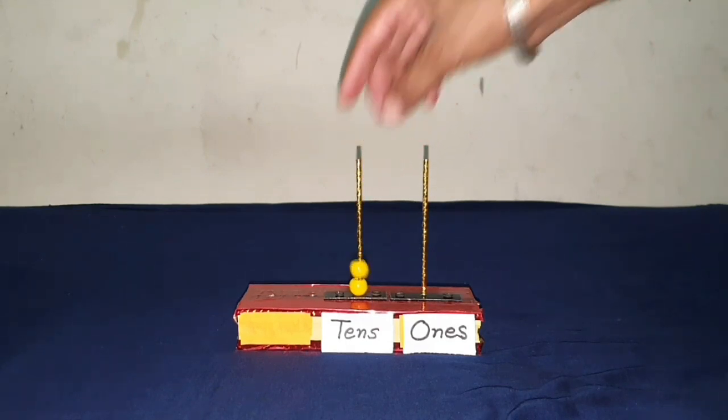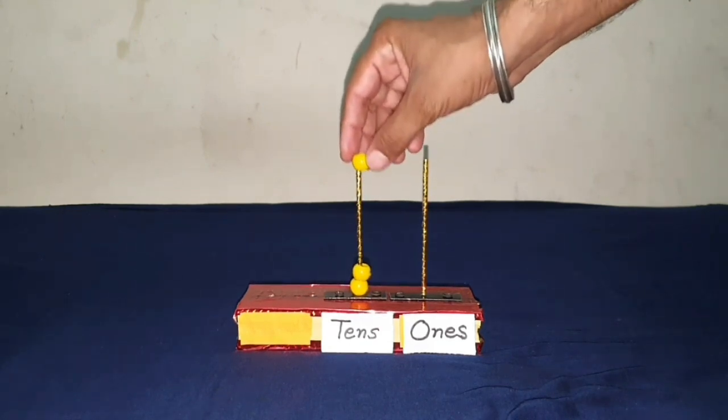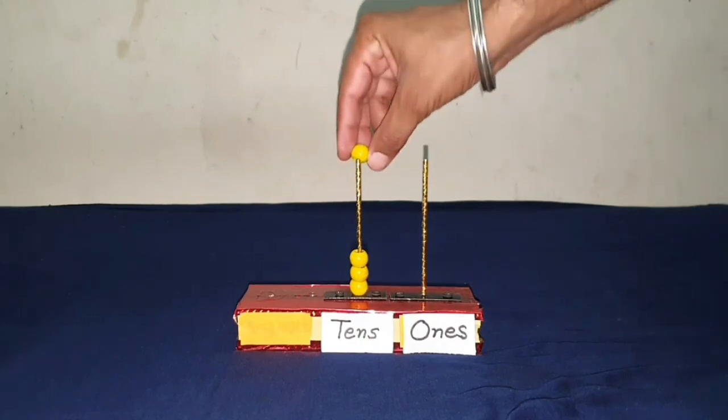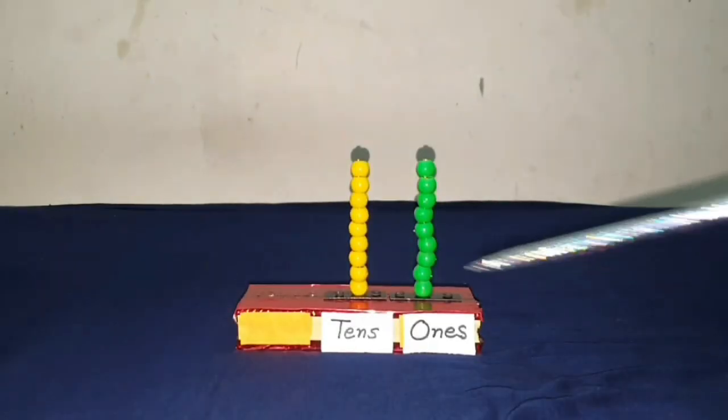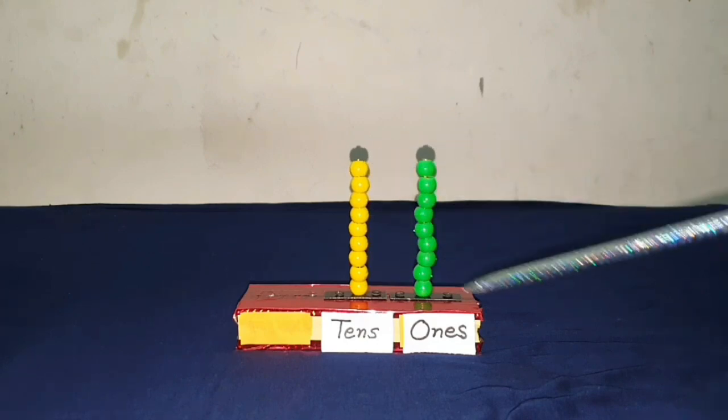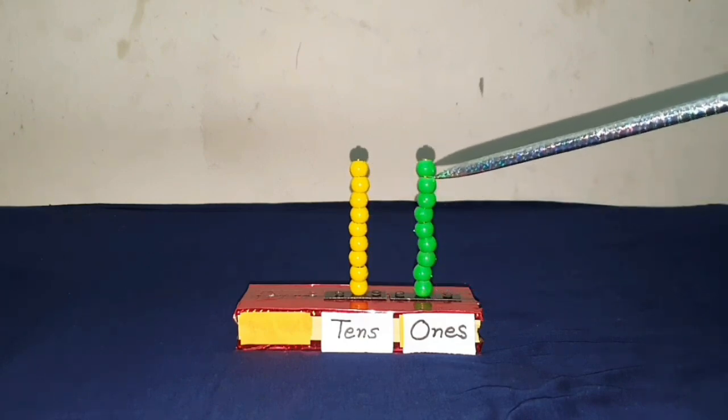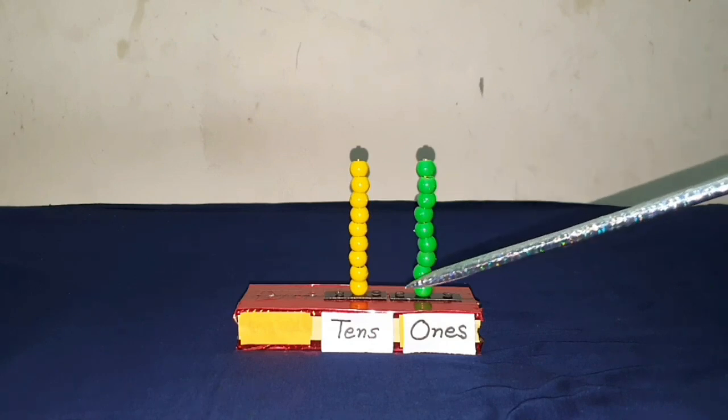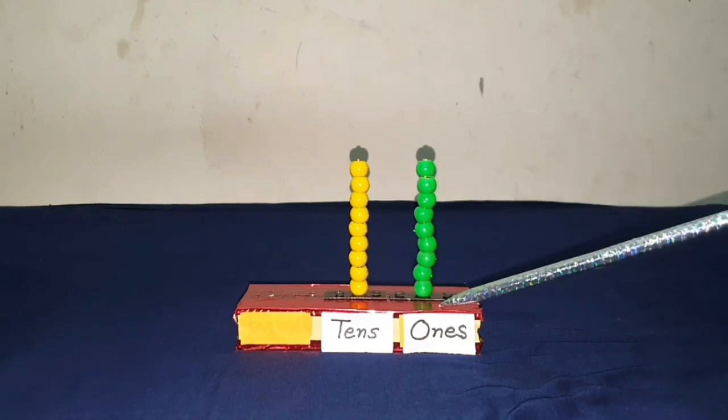We already learned that a rod of abacus can hold maximum of nine bits. Nine bits in rod of tens means ninety. Nine bits in rod of ones means nine. This means the greatest two digit number is ninety-nine.